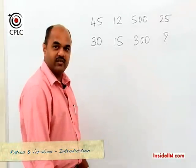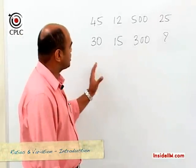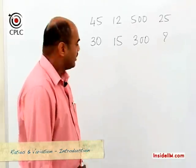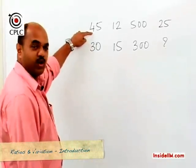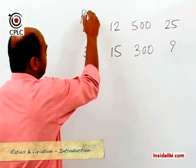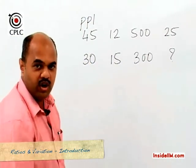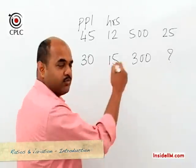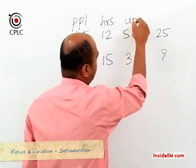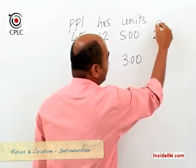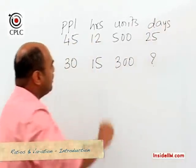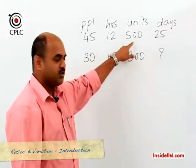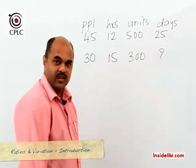What you can see on your screen right now may seem as just some numbers written down without any meaning, so let's attach some meaning to it. Suppose we say that 45 people working for 12 hours a day can actually do some work which is equivalent to 500 units in 25 days. So 45 people working 12 hours a day complete 500 units of work in 25 days.